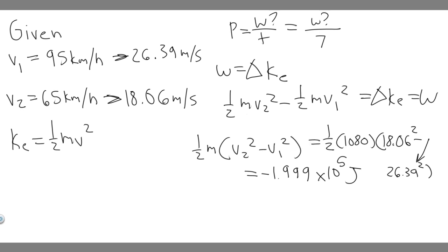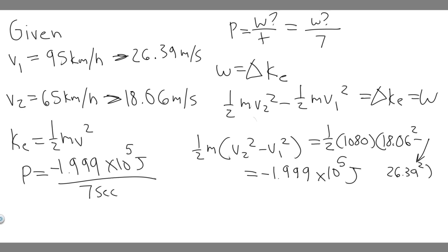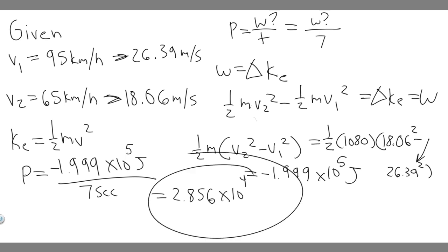Now that we have the work, we can plug it in and solve for power. Power equals work over time, so: P = (−1.999 × 10⁵ joules) ÷ 7 seconds. The magnitude gives us 2.856 × 10⁴ watts. So the power needed is 2.856 × 10⁴ watts.